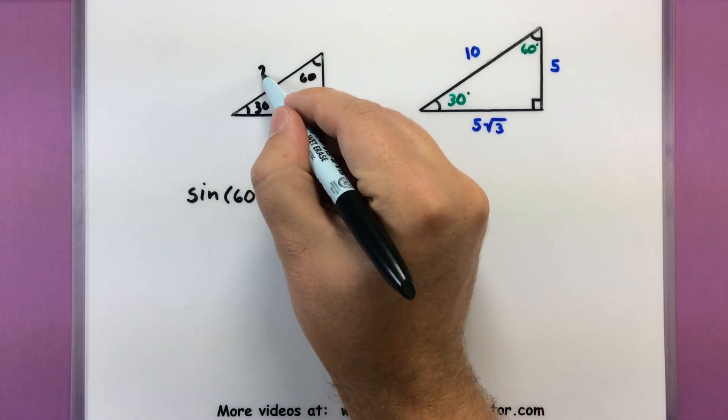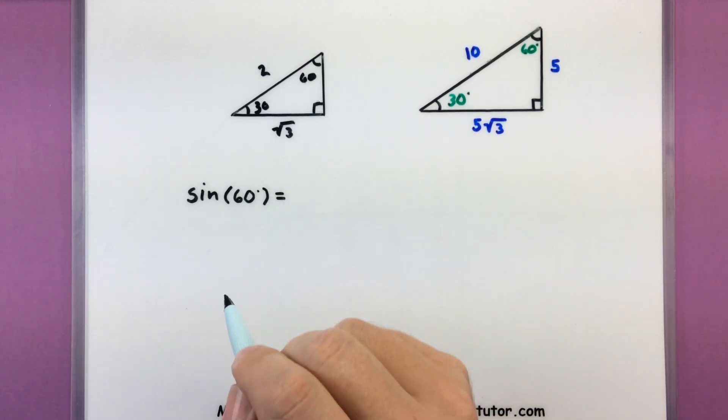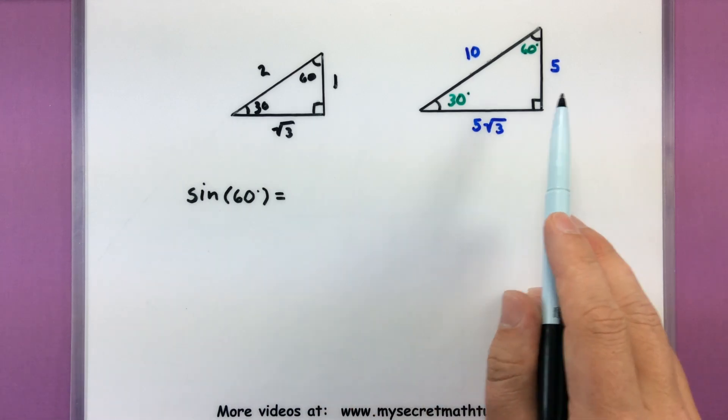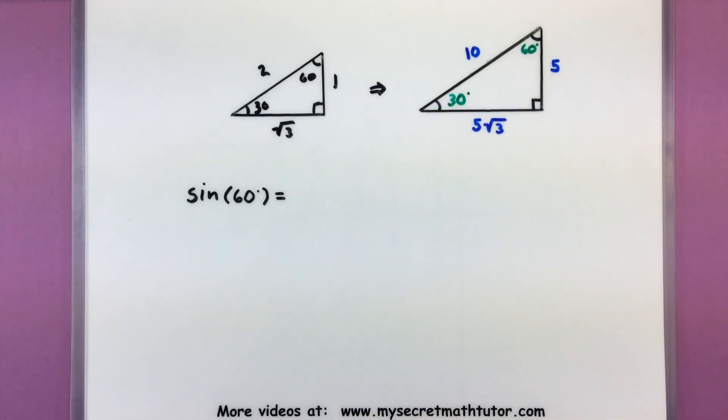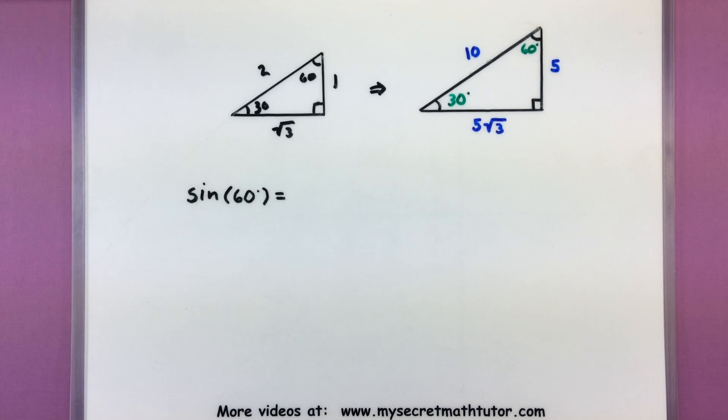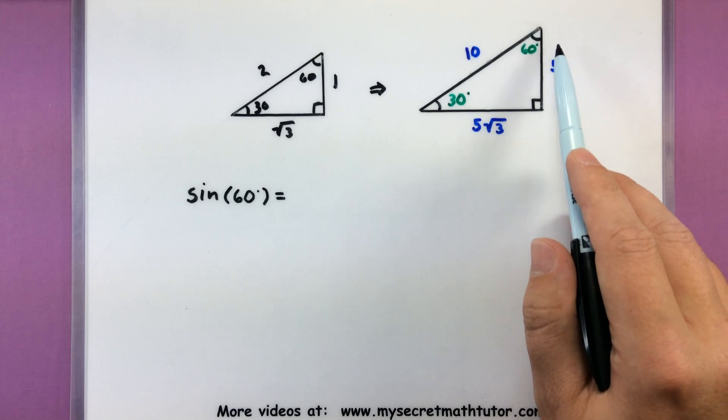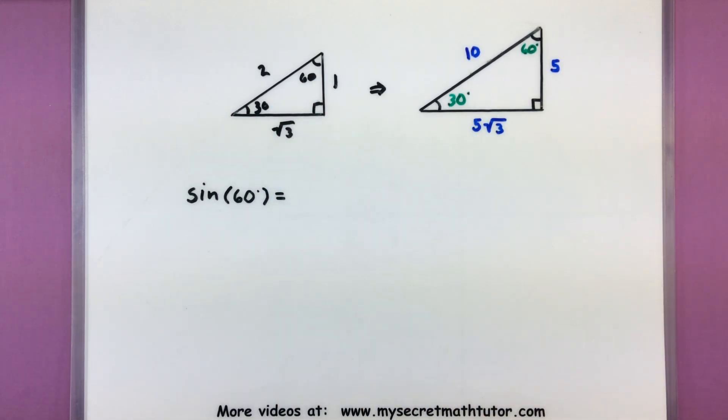So our hypotenuse would be 2, our large side is square root of 3, and the smaller side is just 1. And what you really want to recognize between these two triangles is that things have been scaled up. And oftentimes you can use a known side to figure out how much it's been scaled up by. So in this case, this side has been scaled up by 5, and so have all the other sides. Everything has been multiplied by 5 to create a brand new triangle.